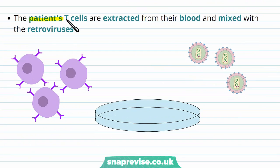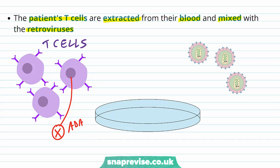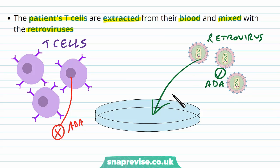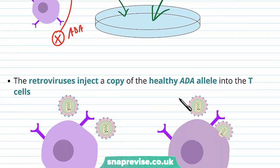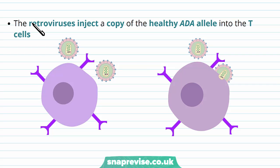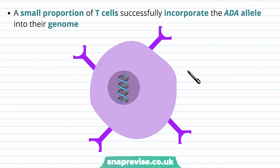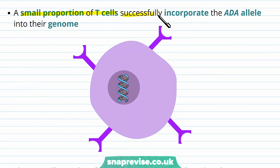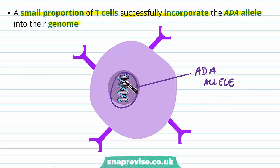The patient's T cells are extracted from their blood and mixed with the retroviruses. These T cells have a faulty version of ADA in their nucleus, but the retroviruses carry a healthy version of ADA. The viruses are mixed in with the T cells in specific equipment, and since retroviruses naturally infect T cells, they inject a copy of their healthy ADA allele into the T cell's nucleus. Not all T cells will successfully incorporate the ADA allele into their genome — only a small proportion will.